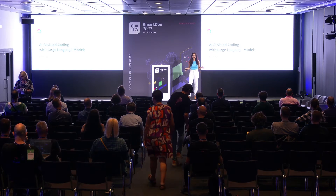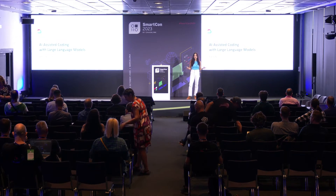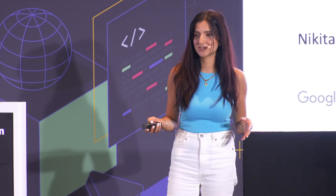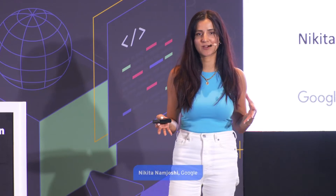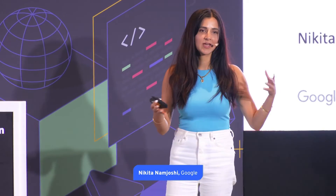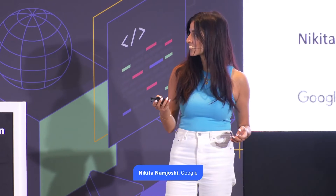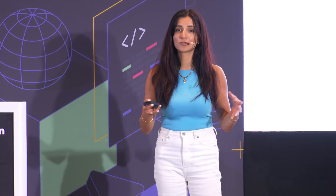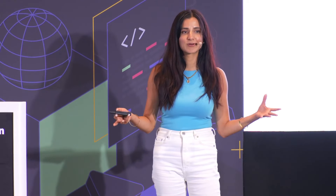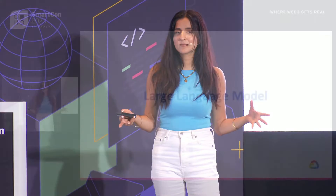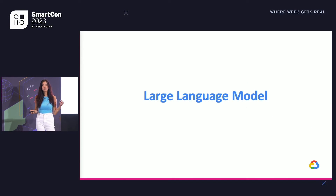AI has become really good at language and conversation, and probably a lot of people here have even chatted with one of these AIs through a chatbot interface like ChatGPT or Google Bard. This is all thanks to a powerful kind of neural network called a large language model, also known as an LLM. LLMs are enabling computers to process complex, nuanced language and generate language more eloquently than ever, which is unlocking a whole bunch of interesting applications.